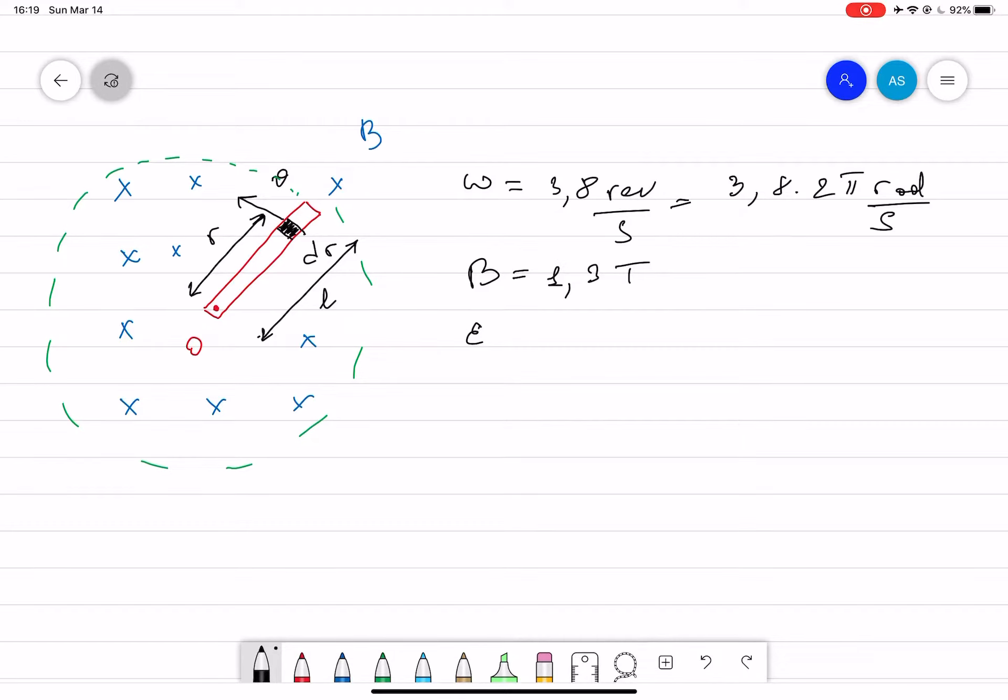Now we know that EMF is equal to B × v × r. Because we're interested in what's happening at this range, for a small element dr, the differential EMF, d(EMF), is equal to B v dr.